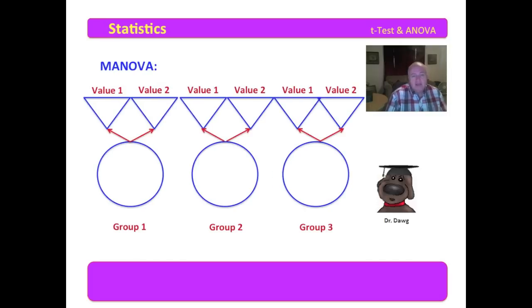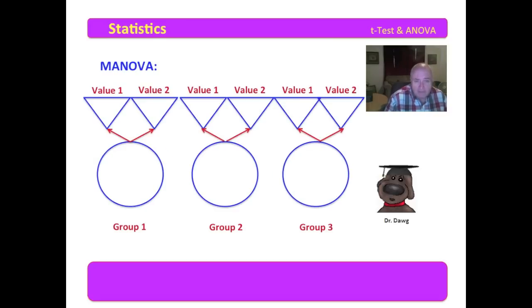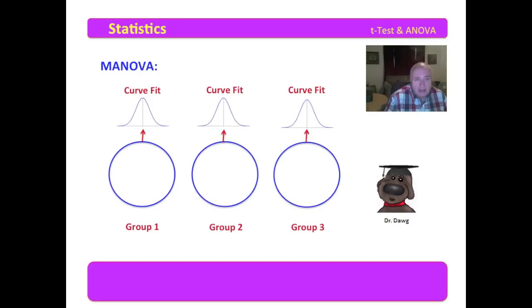MANOVA is pretty cool. Let me tell you a little bit about how MANOVA works. We have dependent variable one and dependent variable two for each group. What MANOVA does is perform a curve fit of those variables — it's important that they have normality in those dependent variables. MANOVA then does a curve fit and compares these unique curves: variable one and variable two for each group. It takes value one and value two, builds them into a curve fit, and then compares those curves. That's fairly profound.